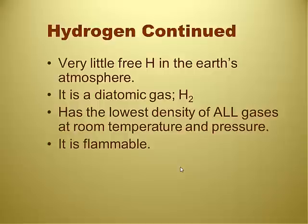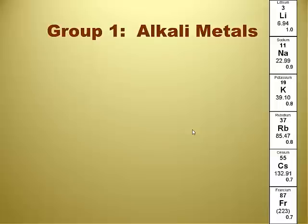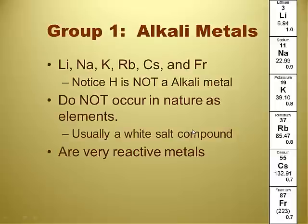Hydrogen is one of the diatomics and has the lowest density. Now, alkali metals: lithium, sodium, potassium, rubidium, cesium, and francium. This is group one — group and family are interchangeable terms. Notice that hydrogen is not considered an alkali metal, even though it sits on top of lithium on the periodic table. It is not an alkali metal.